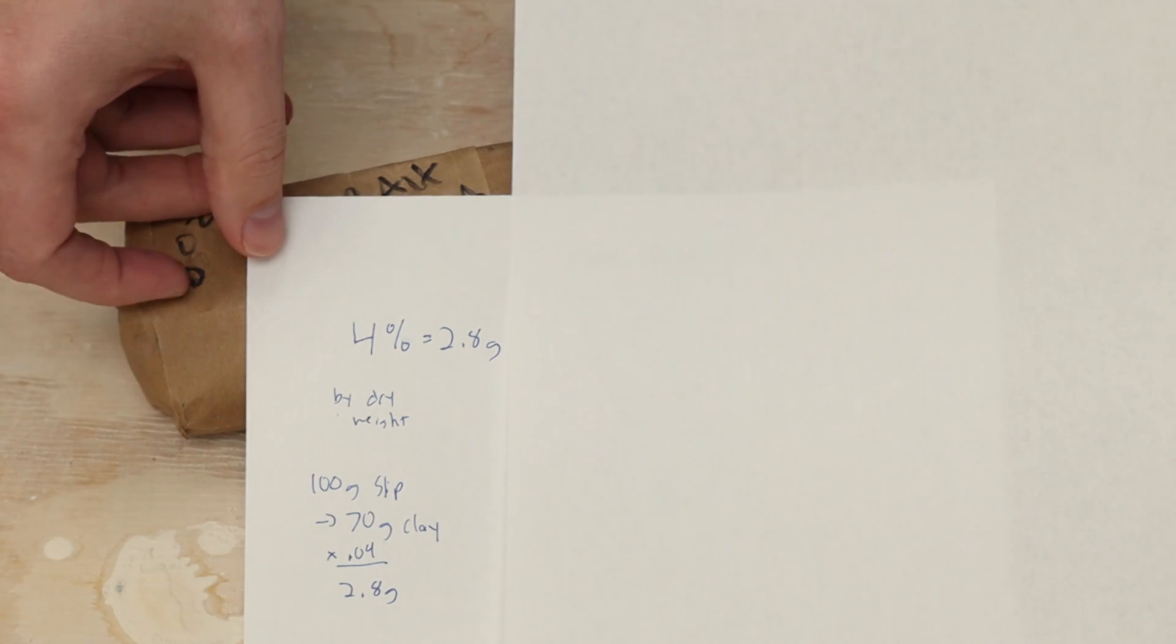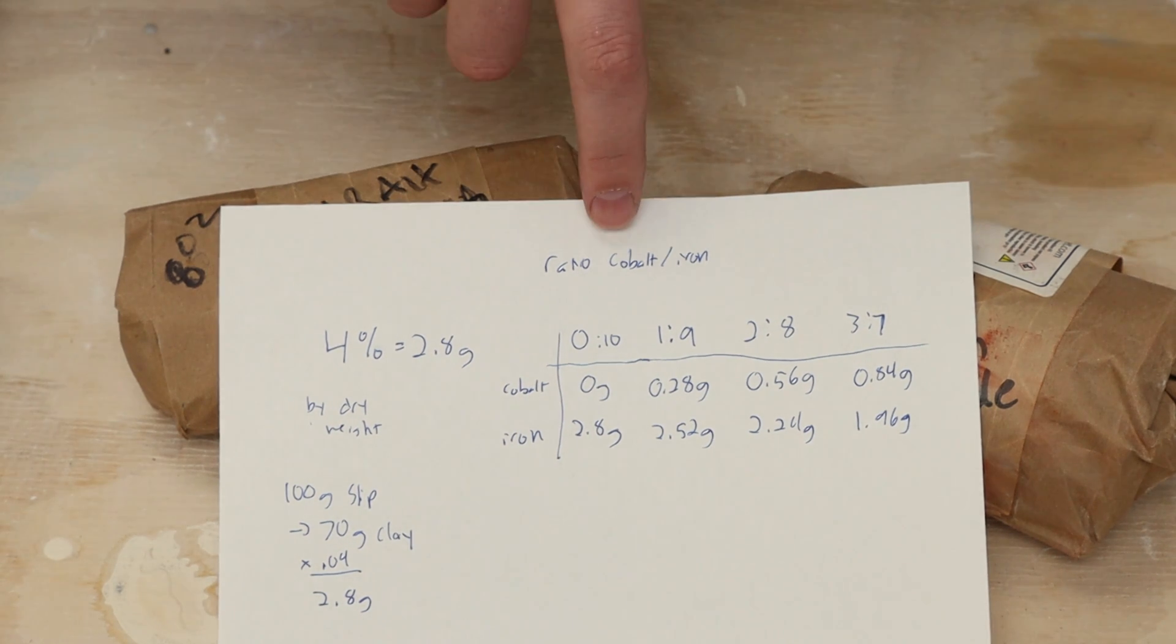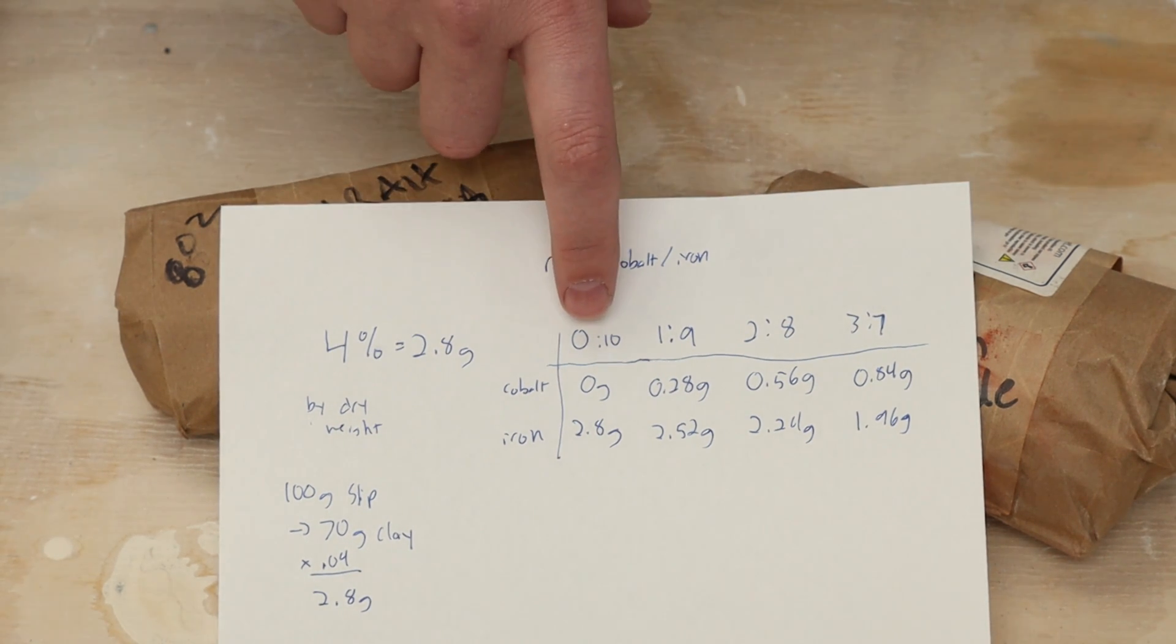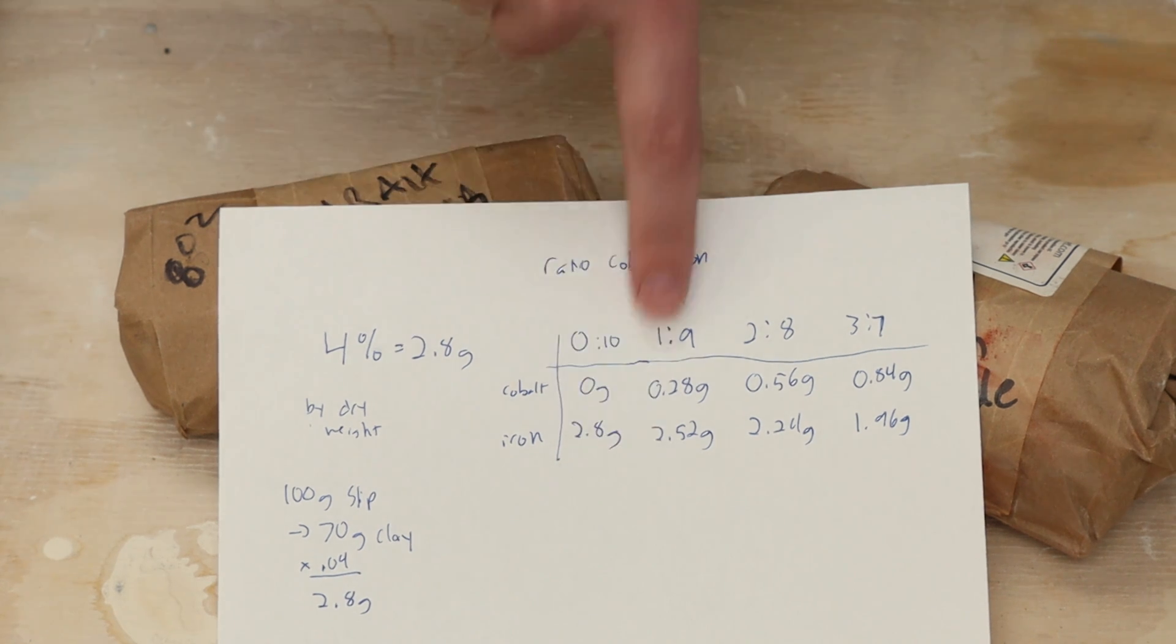Now I want to try different ratios. I'm going to try different ratios of the cobalt to iron. I want a ratio of 0 to 10, so this will be all iron, 1 to 9, 2 to 8, and 3 to 7.